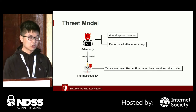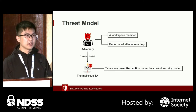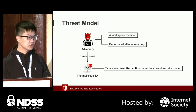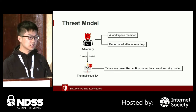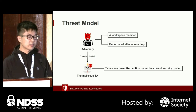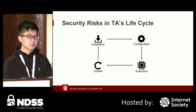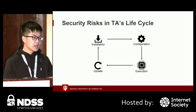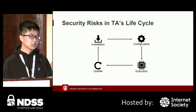Let me introduce our threat model. We assume the adversary is a workspace member with the privilege to create and install a team chat app in the workspace. The team chat app can take any permitted action under the current security model, and the adversary performs all attacks remotely without accessing the victim's computer or software. Considering this threat model, the question becomes whether the current access control model in team chat systems can adequately protect data and regulate a team chat app's behaviors. In our research, we find there are many security risks in the whole lifecycle of a team chat app, including installation, configuration, execution, and update.